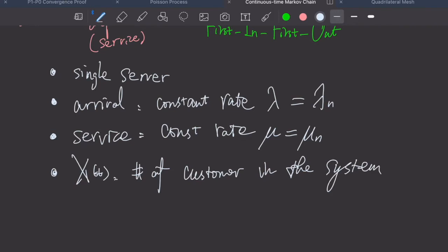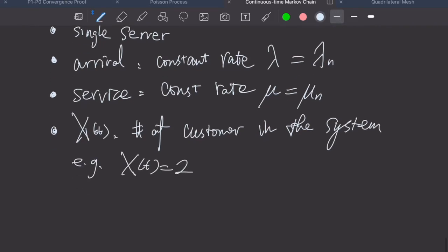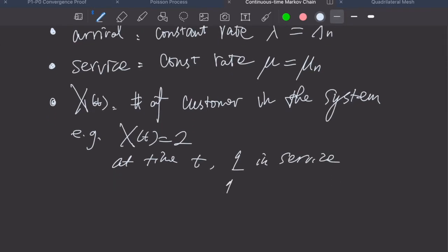For example, our X(t) represents the total number of customers in the system. If X(t) is 2, it means at time t, there is one in service, one is being served, and there is another one in the queue.